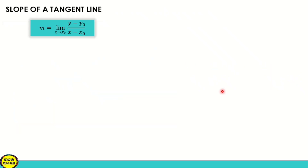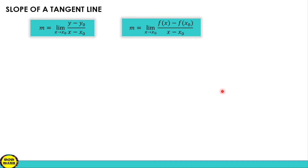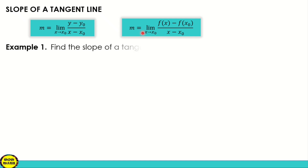To compute the slope of a tangent line, we have two formulas but they are the same. We have the limit of (y minus y₀) all over (x minus x₀) as x approaches x₀, or we can use the limit of (f(x) minus f(x₀)) all over (x minus x₀) as x approaches x₀. We know that y = f(x) and y₀ = f(x₀), so either formula can be used.